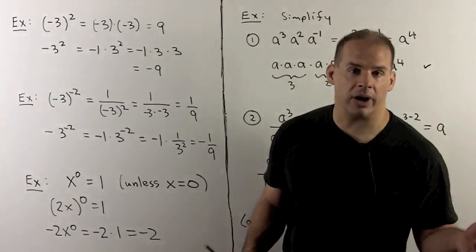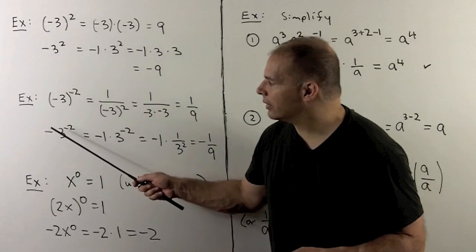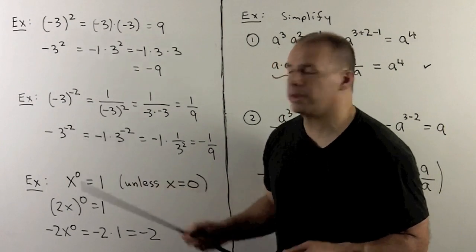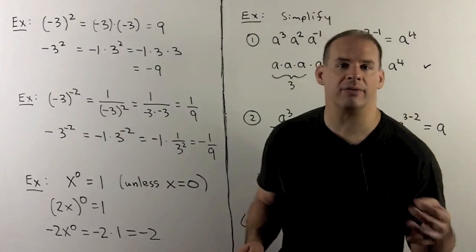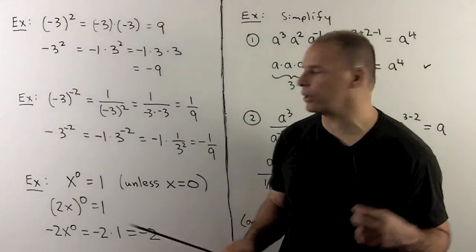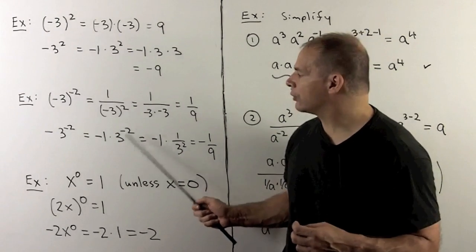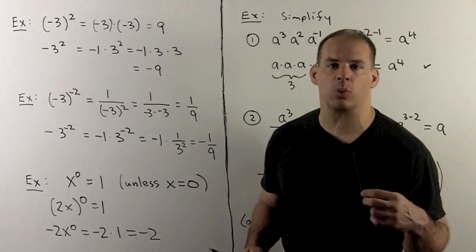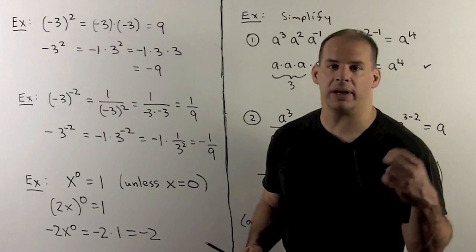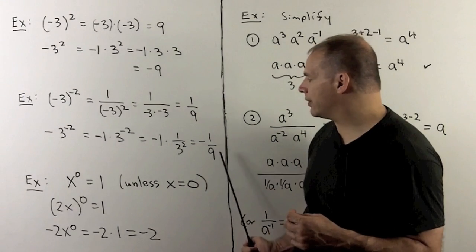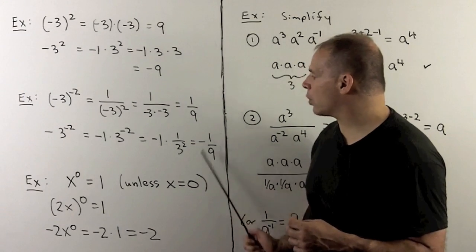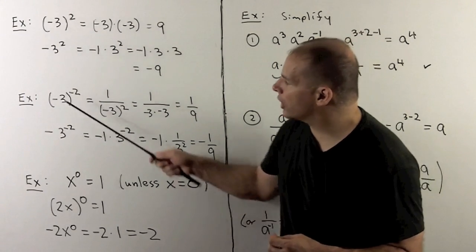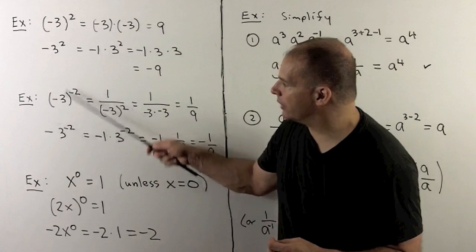On the other hand, if we just have the minus in front with no parentheses, that's shorthand for minus 1 times 3 to the minus 2. 3 to the minus 2 is just 1 over 3 squared, which is 1 ninth. So I get a minus 1 ninth. As before, these are going to be different, so we have to be careful with this.